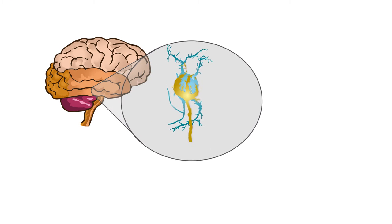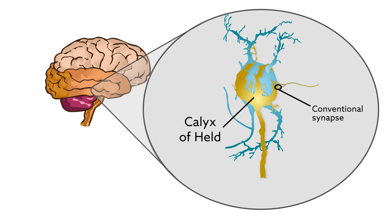In this study, the researchers therefore selectively eliminated GIT expression from the calyx of Held, a giant pre-synapse in the auditory brainstem.